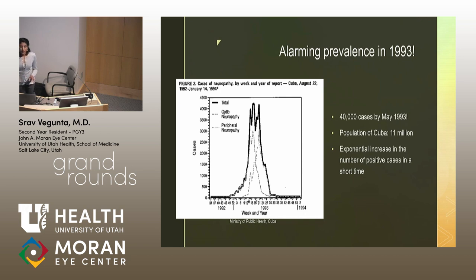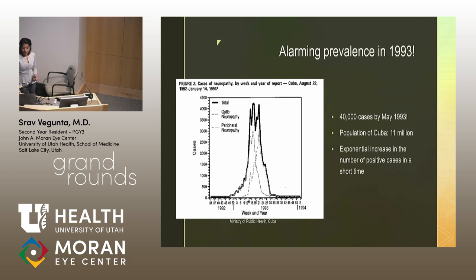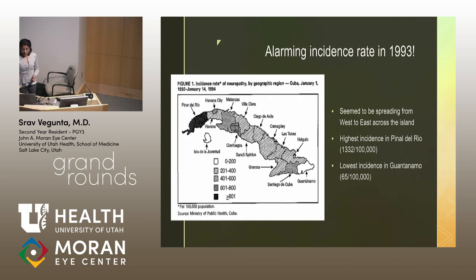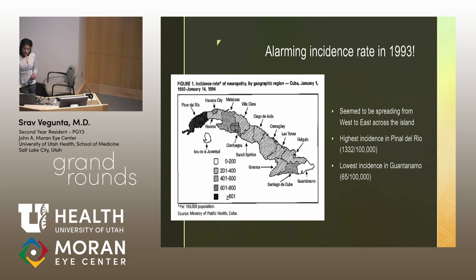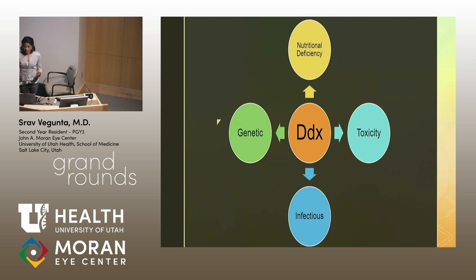By 1993, there were an alarming 40,000 cases. With Cuba's population of just 11 million, that's 0.5% of the population — a significant number. The graph shows an exponential increase from 1992 to 1993 in both the optic and peripheral forms. There was also a pattern: the neuropathy spread from west to east, with the highest incidence rate still in Pinar del Rio and the lowest in Guantanamo at 65 per 100,000.